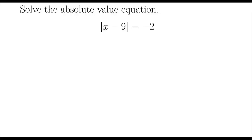Let's solve the absolute value equation: the absolute value of x minus 9 equals negative 2. This is a trick question. The absolute value can only equal a positive number or 0.